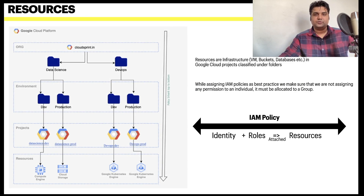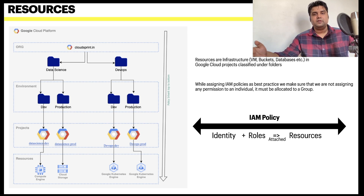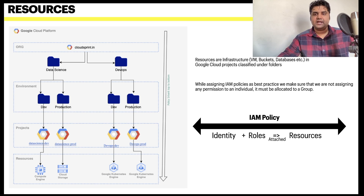Now let's understand resources. Resources are the infrastructure in Google Cloud, classified under projects inside folders. In a previous video, we created an org node, folders for DevOps, Data Science, and environment-based sub-folders, plus four projects. When you create actual cloud resources, they fall under this category. As a best practice, we never assign IAM permissions to individuals — always to groups.